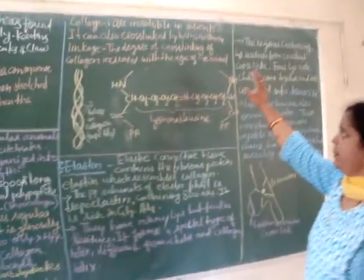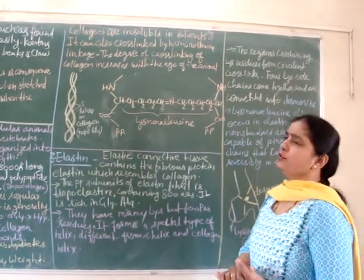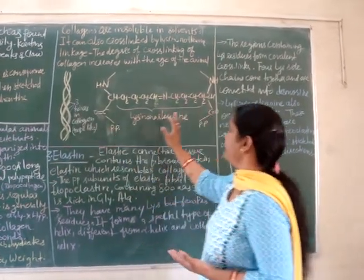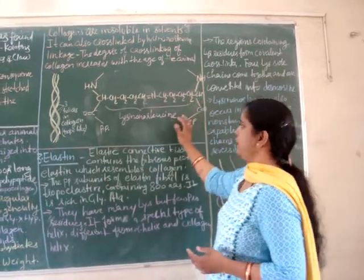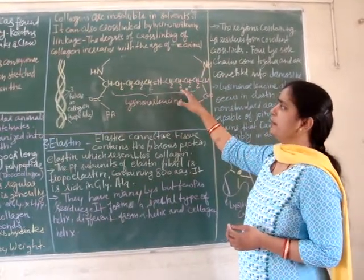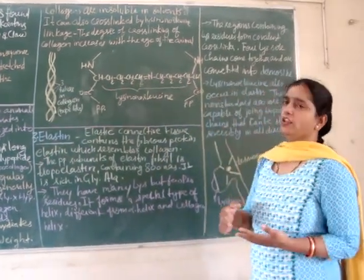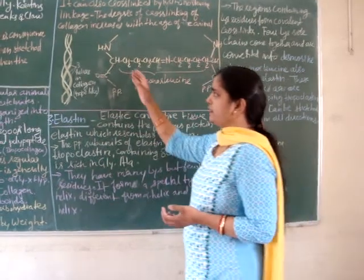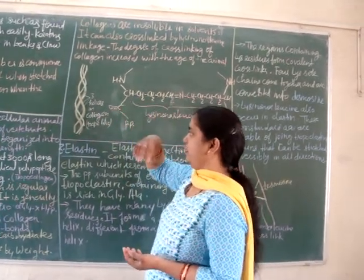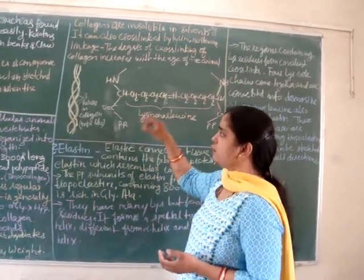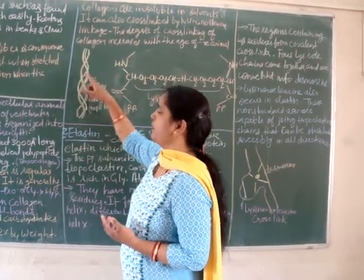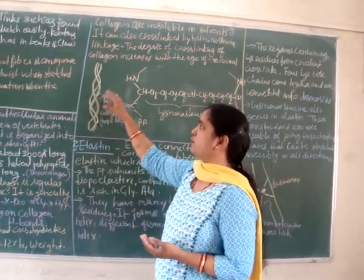Collagen is insoluble in solvents and can also be cross-linked by lysine through unusual amino acid linkages. Lysine present in one polypeptide chain bonds with lysine present in an adjacent polypeptide chain, resulting in the formation of the unusual amino acid lysinonorleucine. The degree of this cross-linking increases with the age of the animal. The structure of collagen is a rope-like structure in which three helices are wound around each other. Every third residue is glycine due to its small size, and proline is present for its rigidity.